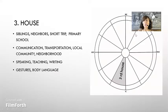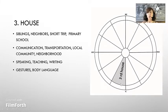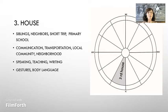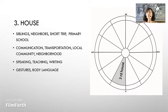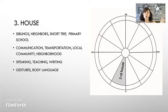Third house: siblings, neighbors, short travel, primary school, communication, transportation, local community, neighborhood, speaking, teaching, writing, gestures, body language. The third house is known as a cadent house. These houses are far from angles — they are the first house to fall from the angles, or the last one to reach the angles. Therefore, they are considered bad houses. In cadent houses, we need to adapt to something new, something far away from us. Everything that is started needs to be adjusted according to the new era and need. The third house is related to information — it refers to how we communicate, how we interact with our environment and siblings, how we organize our thoughts. We filter what is going on in the outside world through this house, and we transfer our thoughts to the outside through this house.